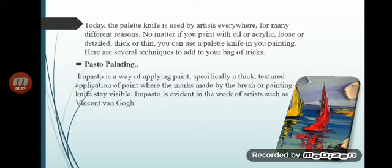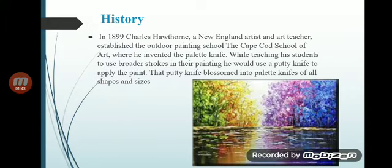Van Gogh's work features thick strokes characteristic of impasto painting. In 1899, Charles Hawthorne, a New England artist and art teacher, established an outdoor painting school — the Cape School of Art — where he invented the palette knife while teaching his students to use broader strokes in their painting.